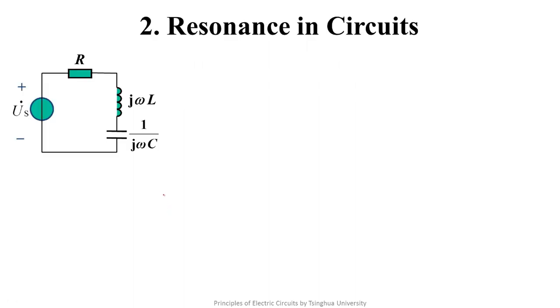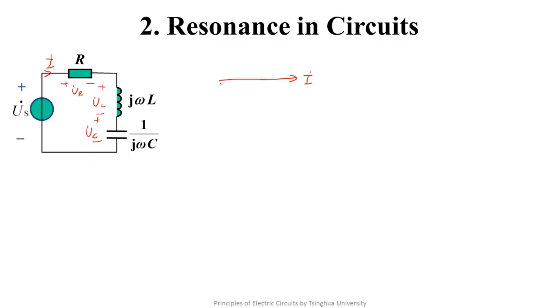Next, let's discuss the resonance in circuits. Firstly, we'll focus on serial RLC circuit. The excitation is voltage source Us. Let's draw the phasor graph of the circuit. We mark every branch variable. We define I as the reference phasor. U_R and I are in phase. U_L leads I by 90 degrees.